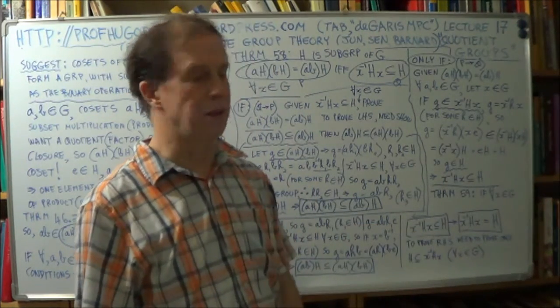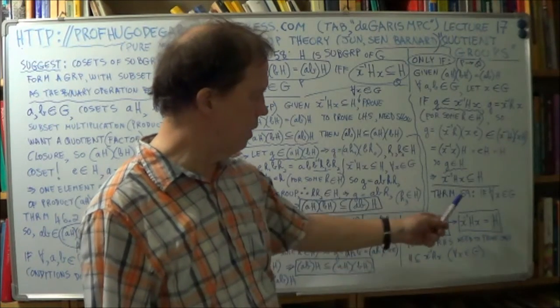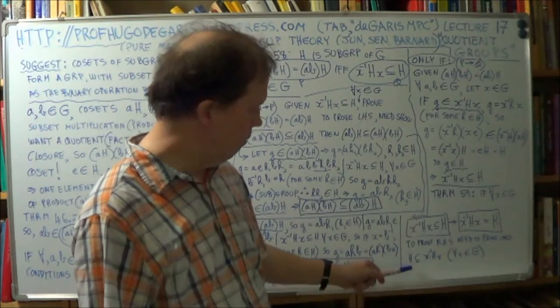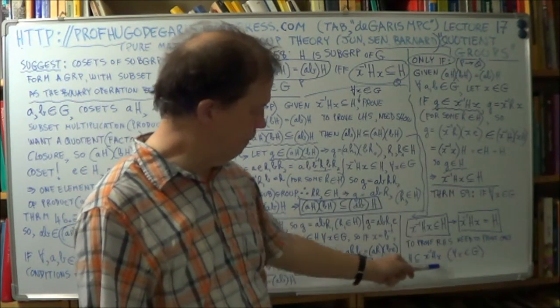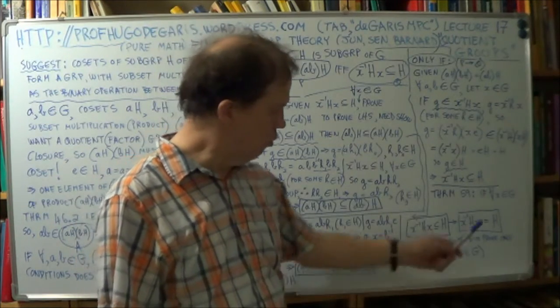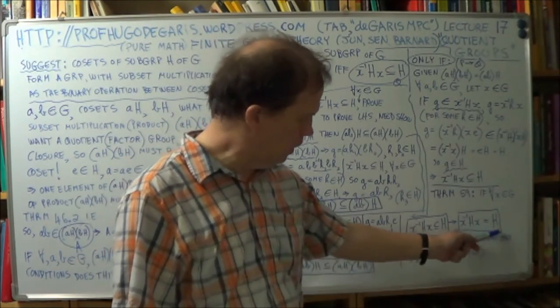Okay, so I'll stop there for the next session, and actually prove theorem 59 by proving this. So now we know what a normal subgroup is. A normal subgroup satisfies this condition.